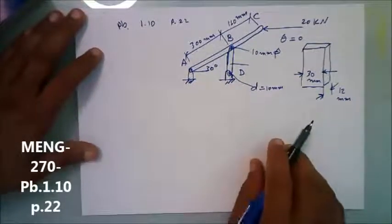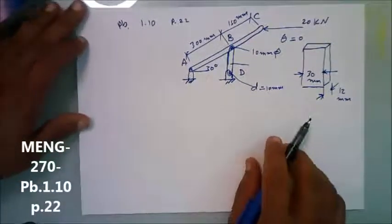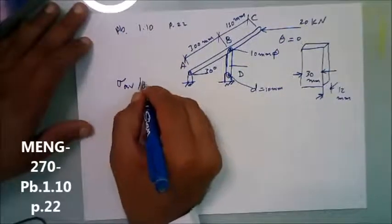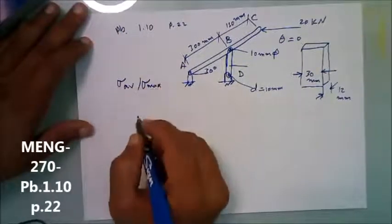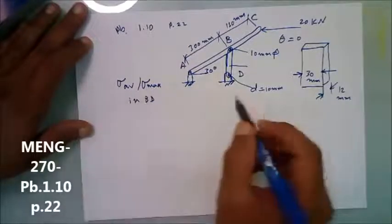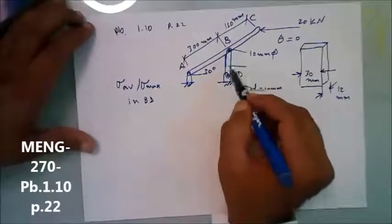Now, he's asking us about the maximum and average, sigma average and sigma maximum in the link BD. In order to solve BD,